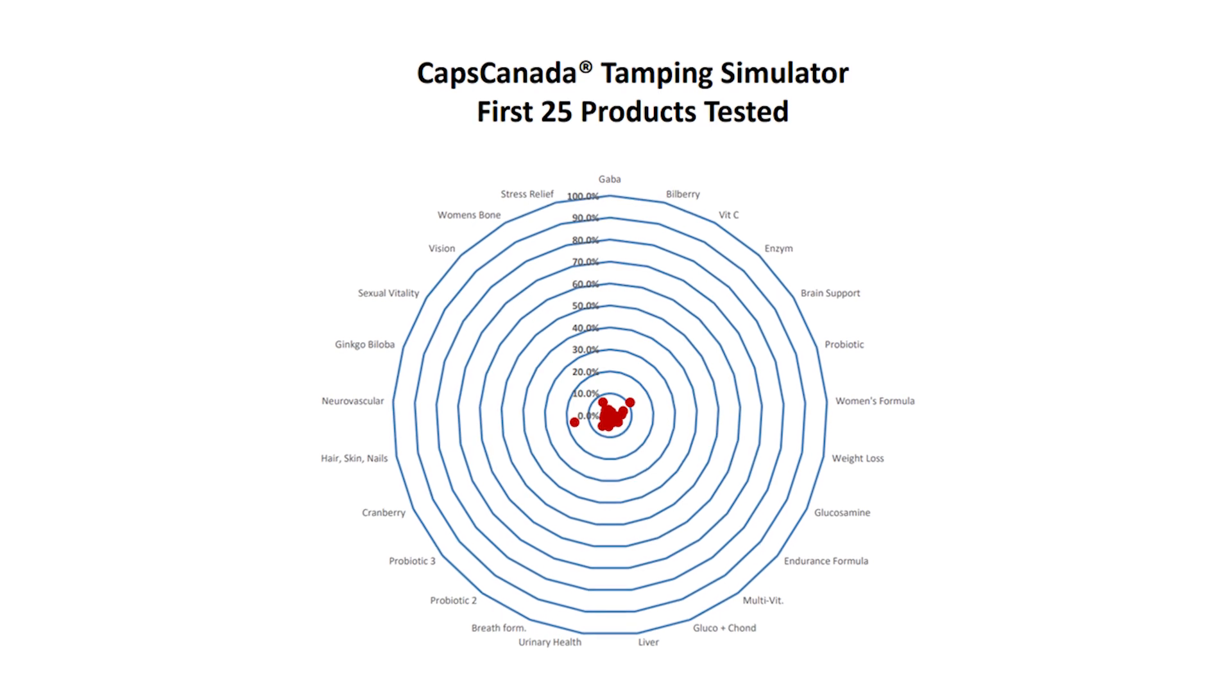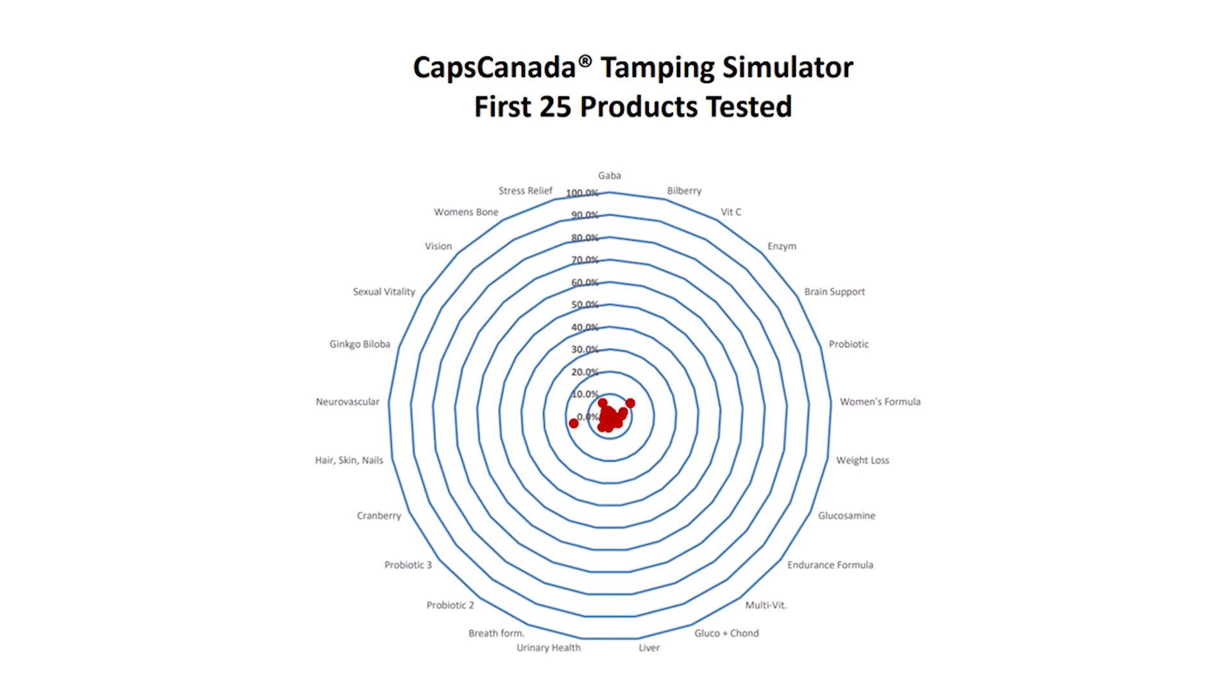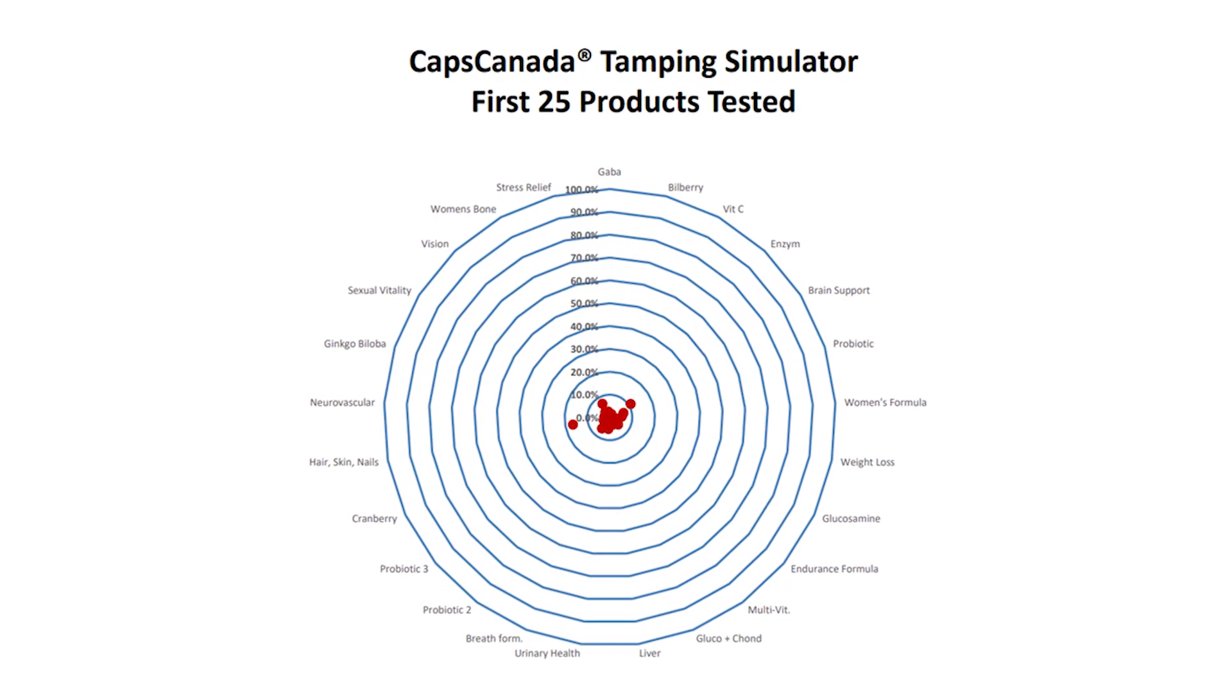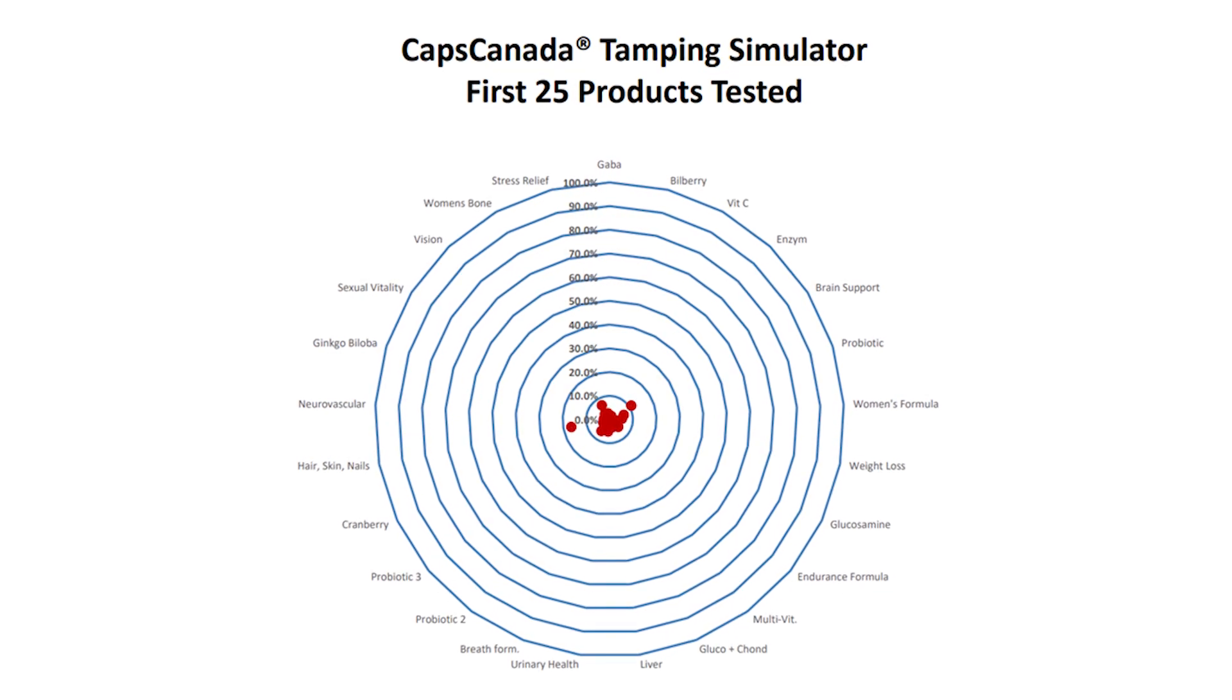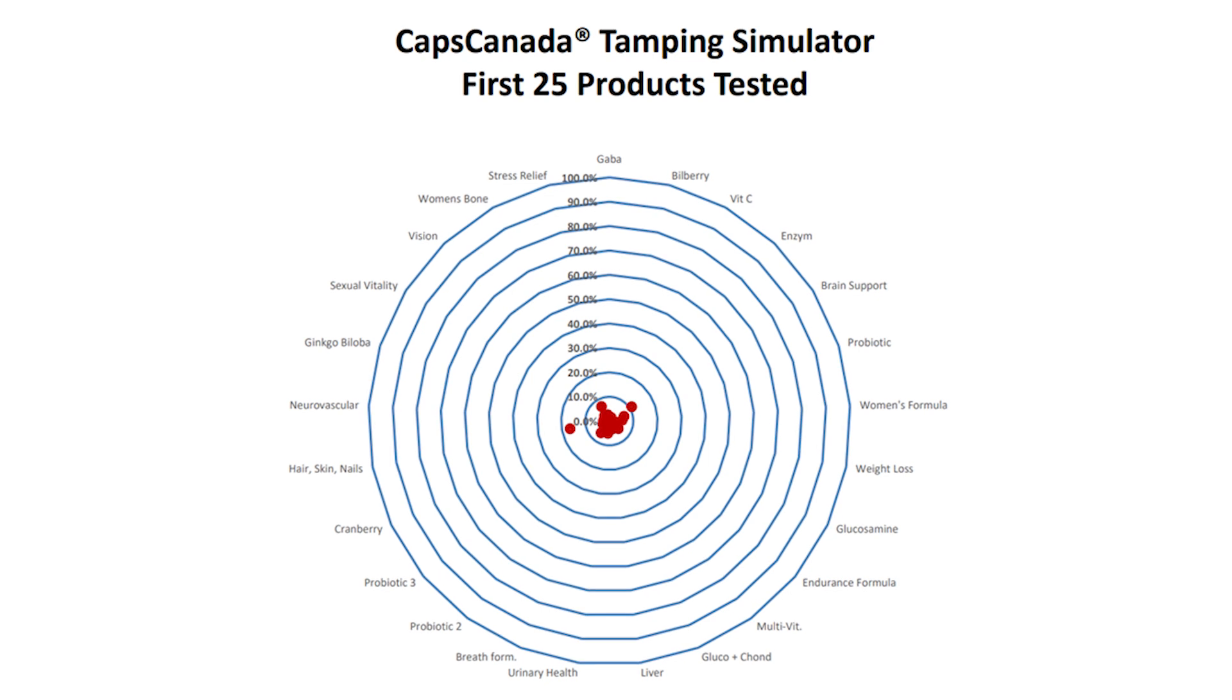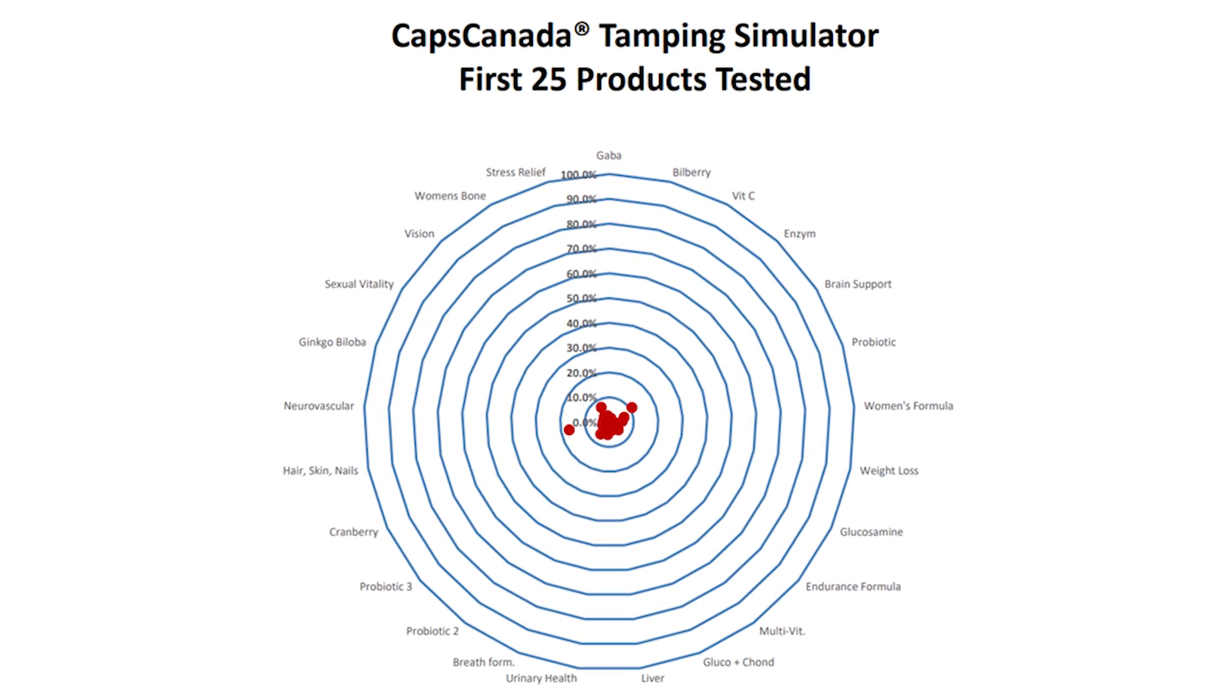This chart shows 25 products which were tested, both on the simulator and different models of Bosch and Synegon filling machines. The measurement taken is the percent difference between the simulator and the filling machine using the exact same settings.